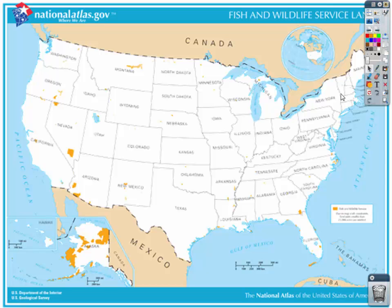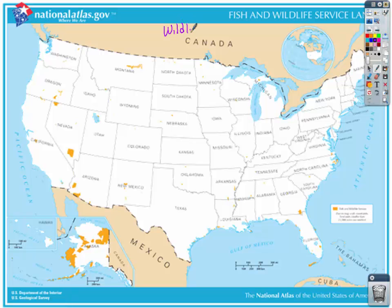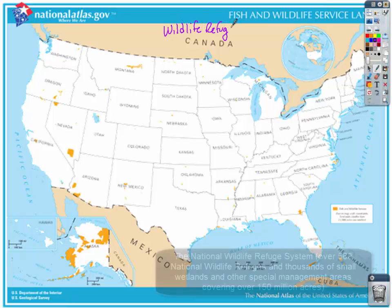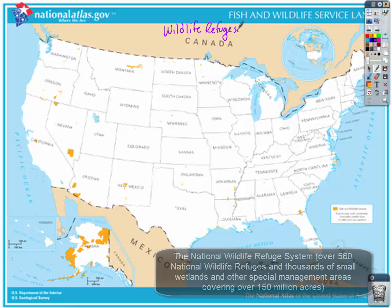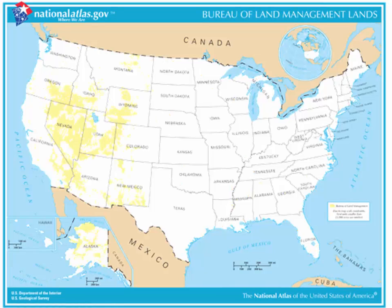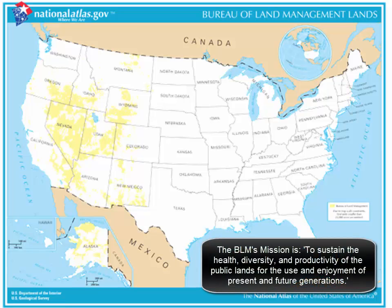The Fish and Wildlife Service owns and manages lands called Wildlife Refuges — places that preserve wildlife habitats and wildlife migration areas. The third bureau is the Bureau of Land Management, or the BLM, which takes care of most of the nation's rangelands. Most of those rangelands are out West and in Alaska. The Bureau of Land Management is one of the more controversial government entities, and we'll talk about that as we move through this lecture.